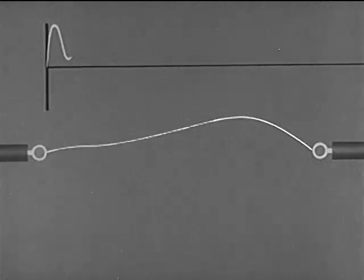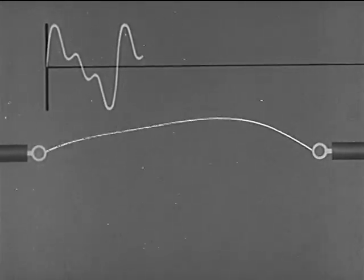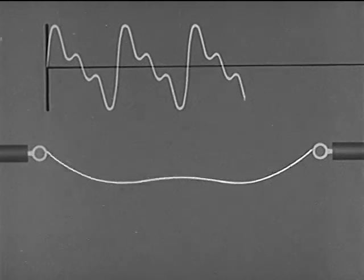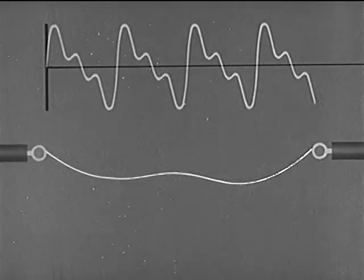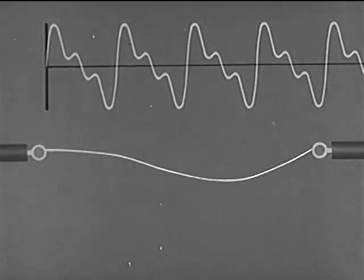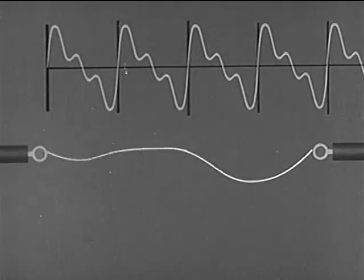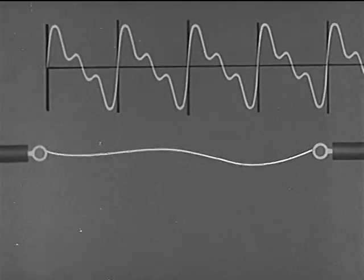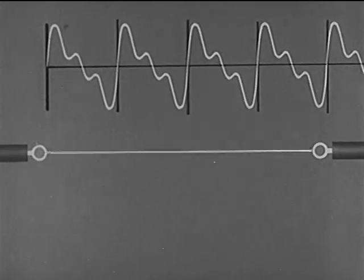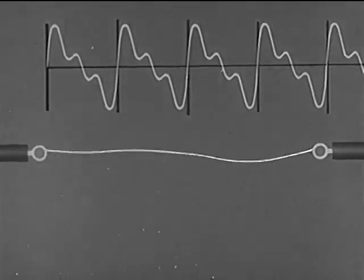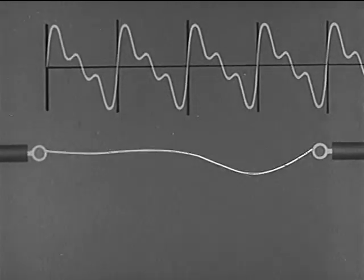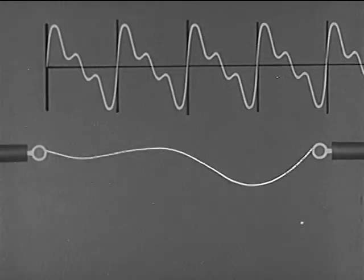But usually, several different modes of vibration occur simultaneously. The result is a compound waveform. Here, we represent the fundamental tone supplemented by its first and second overtones. Differences in the audible components of a sound determine its quality. Quality helps us recognize the characteristic sounds of various musical instruments and distinguish one voice from another.